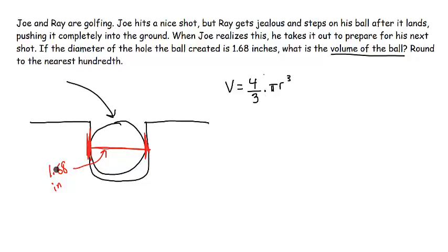And we know the diameter is 1.68, so that's the full length of the sphere. Well, half of that is going to be 1.68 divided by 2, which is 0.84. So then I can plug that in for my radius. So the volume is going to be equal to 4 over 3 times, and we'll use the approximation for pi, 3.14, times the radius, which is 0.84, and we're going to cube that.